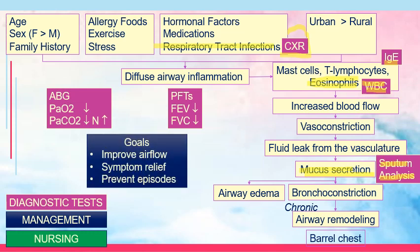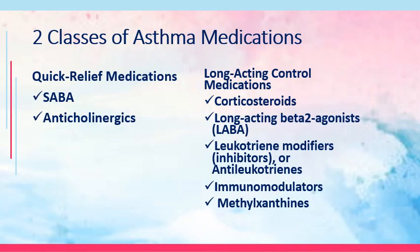Our goal for asthma treatment is to improve airflow, relieve the patient's signs and symptoms, and prevent future episodes. There are two classes of asthma medications: quick-relief medications and long-acting control medications. Quick-relief medications are used during an acute asthmatic attack but cannot prevent future episodes. Long-acting control medications cannot stop an acute asthmatic attack — short-acting medications are needed for that. Long-acting control medications are only good for control, meaning to prevent future asthmatic attacks.